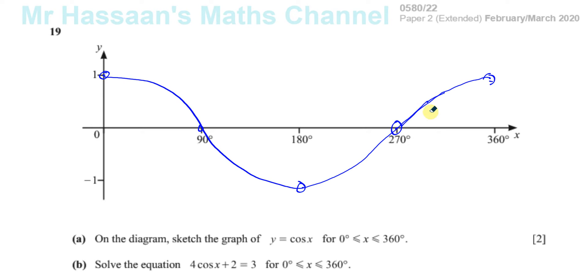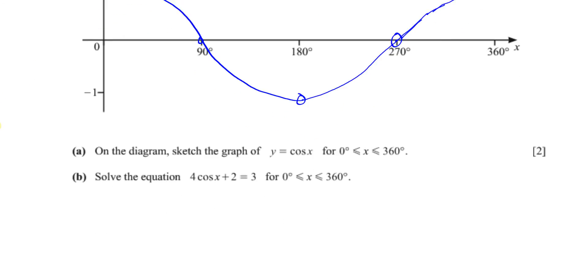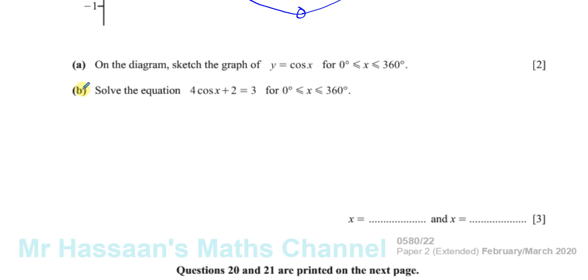It shouldn't have multiple lines, it's one line. Okay, so there we have y = cos x, the best I could do with this pen here. This should get you the two marks. Then it says solve the equation 4 cos x + 2 = 3 for x value between 0° and 360°.